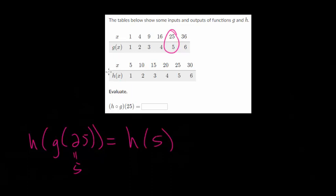And then now we want to go to h of x, find an x value of five, and its y value is equal to one. So in plugging 25 into this composite function, the output would just be one.